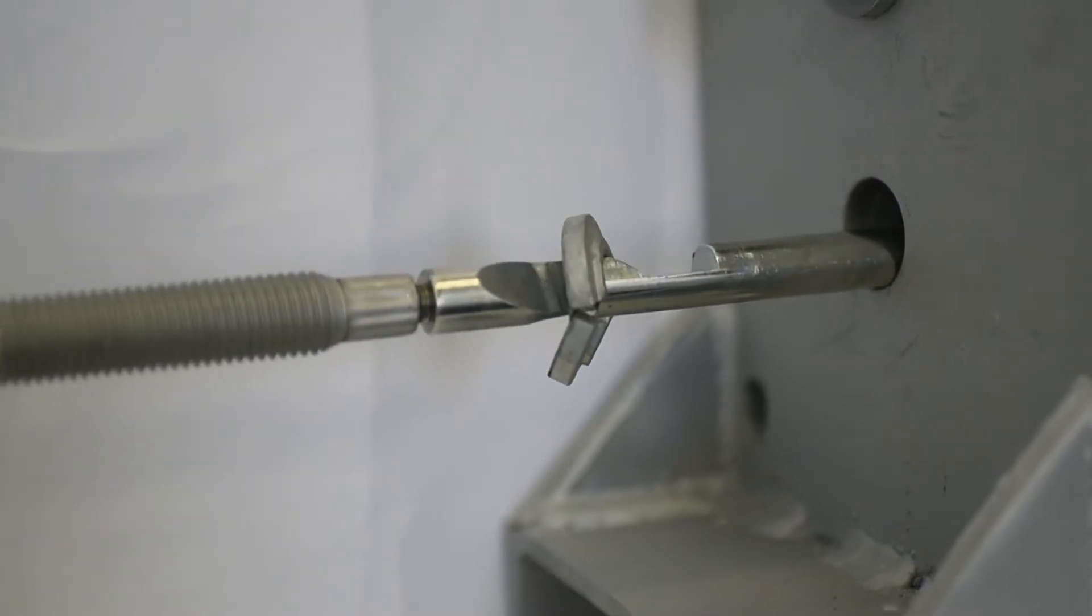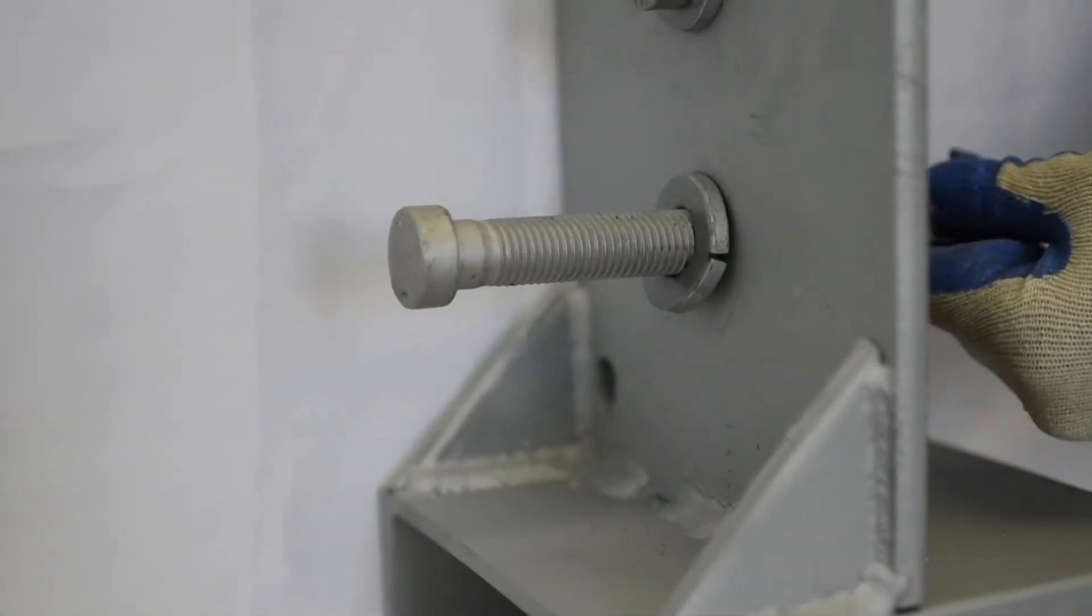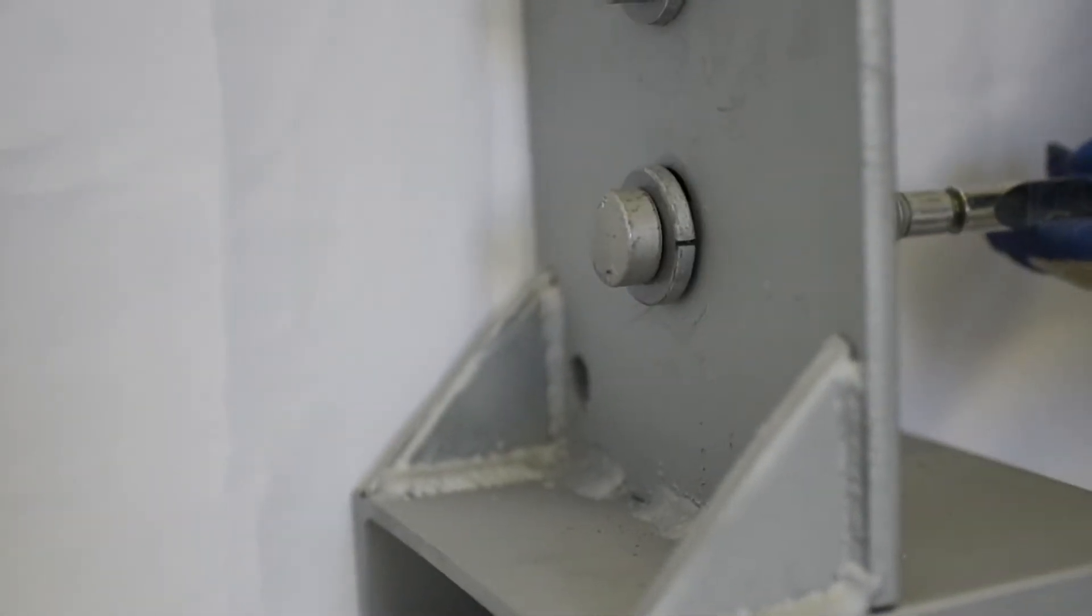Rotate the tool 180 degrees while at the same time pulling back and rocking the tool side to side to engage the collapsible washer.